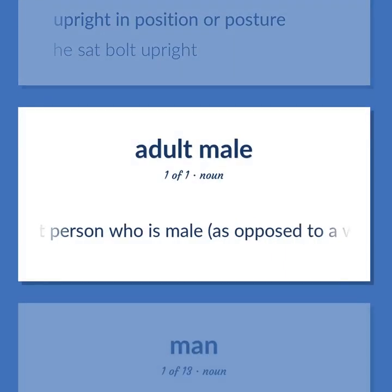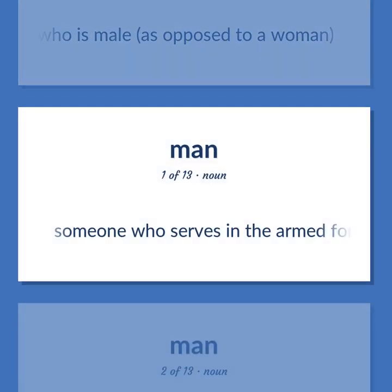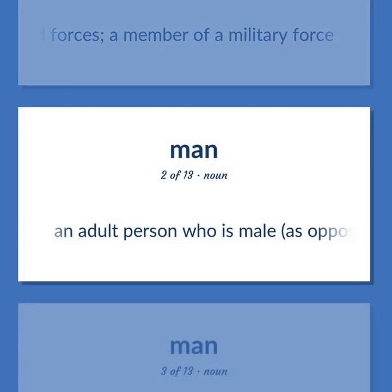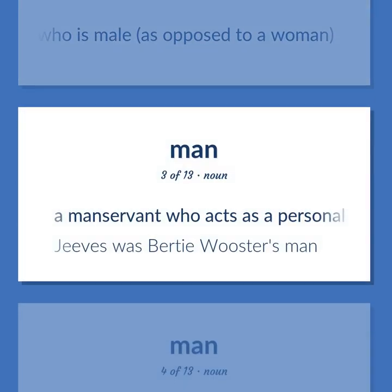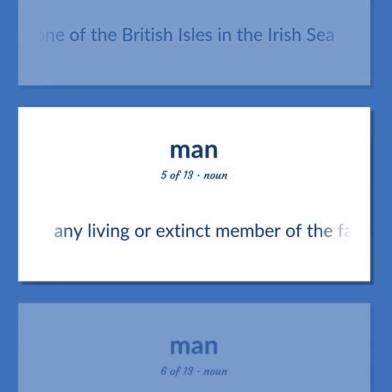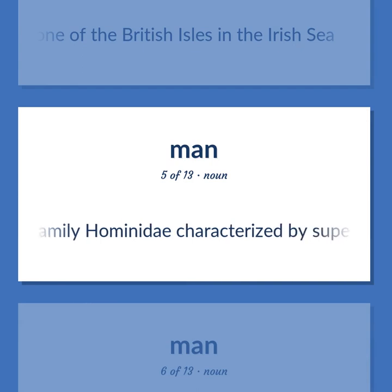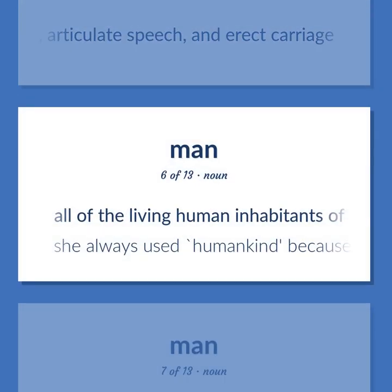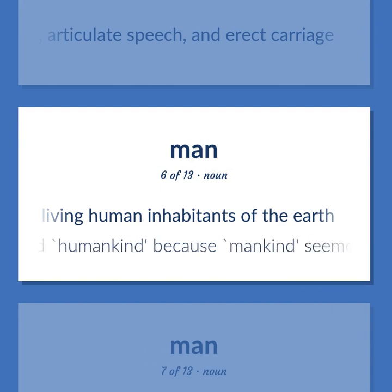Man: An adult person who is male, as opposed to a woman. Someone who serves in the armed forces; a member of a military force. A manservant who acts as a personal attendant to his employer — Jeeves was Bertie Worcester's man. Any living or extinct member of the family Hominidae, characterized by superior intelligence, articulate speech, and erect carriage. All of the living human inhabitants of the earth — she always used 'humankind' because 'mankind' seemed to slight the women.